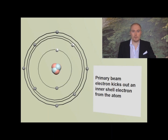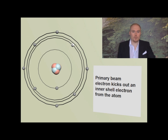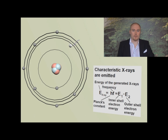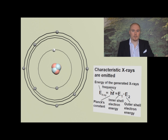When we expose the sample to X-ray radiation or bombard it with electrons, the inner-shell electrons of the sample atoms may be kicked out. The atom cannot stay excited for a long time, so an outer shell electron comes to occupy the empty spot, and during that process characteristic X-rays are generated.